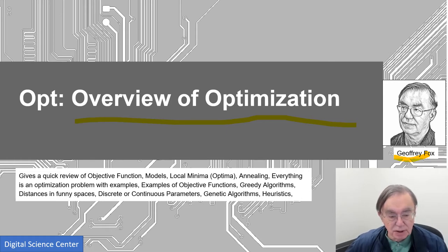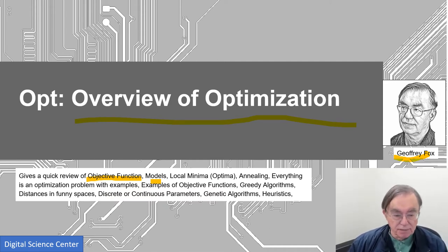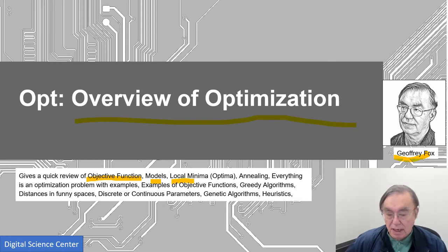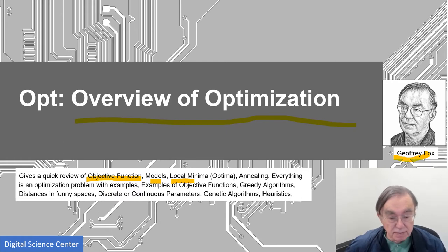We will talk about some broad concepts such as objective functions and models. We spend quite a lot of time on models because one of the remarkable things about deep learning is the type of model it has — it's sort of different from the models we had in the past and actually sort of easier. Then we'll talk about obnoxious things such as local minima, avoiding them with annealing and tempering. We all know that everything in the world is an optimization problem. As you're listening to this show, you're solving an optimization problem of how to get the best possible grade in the least possible time in this course.